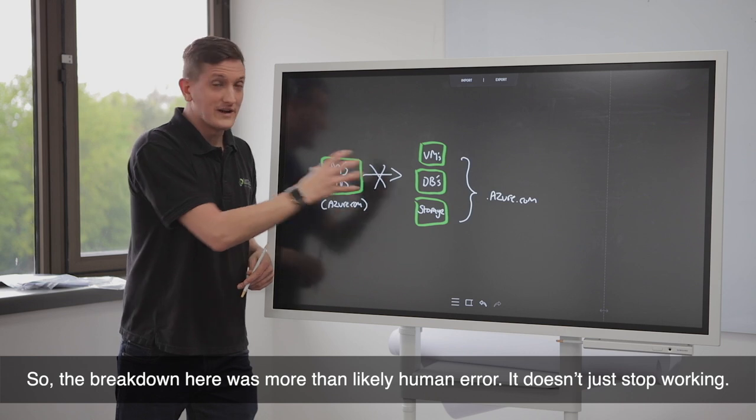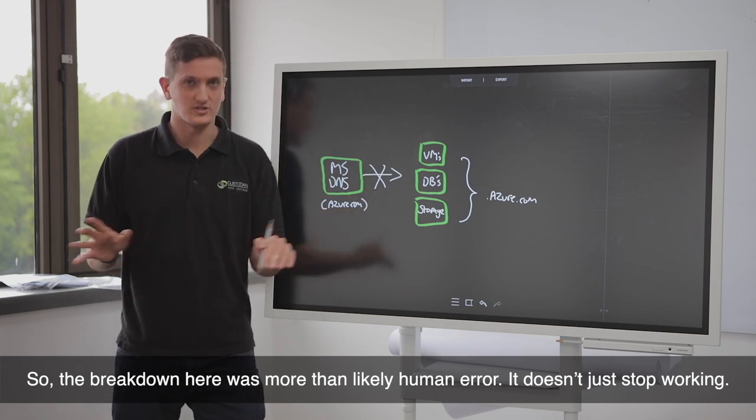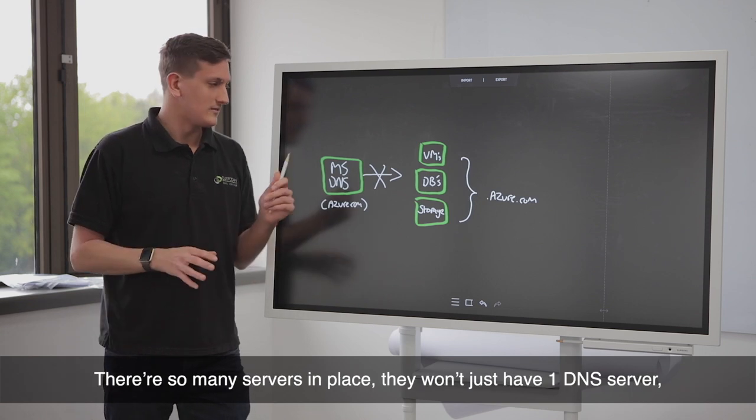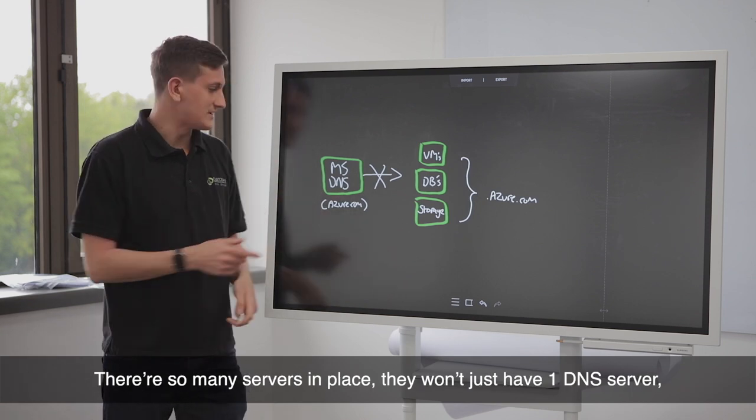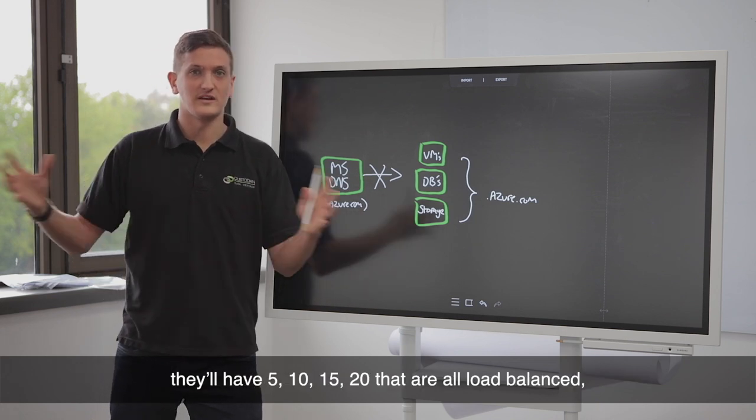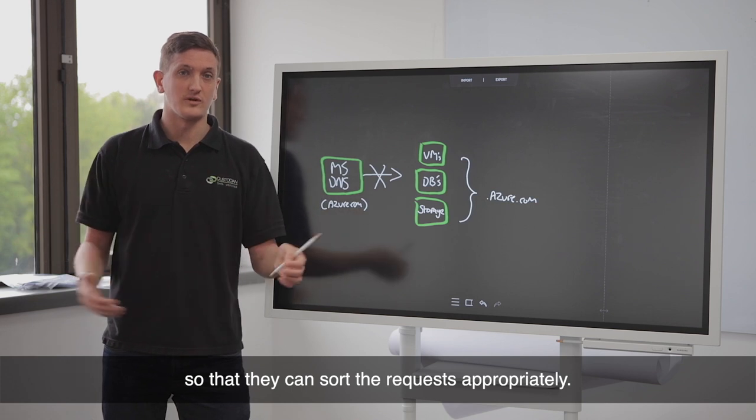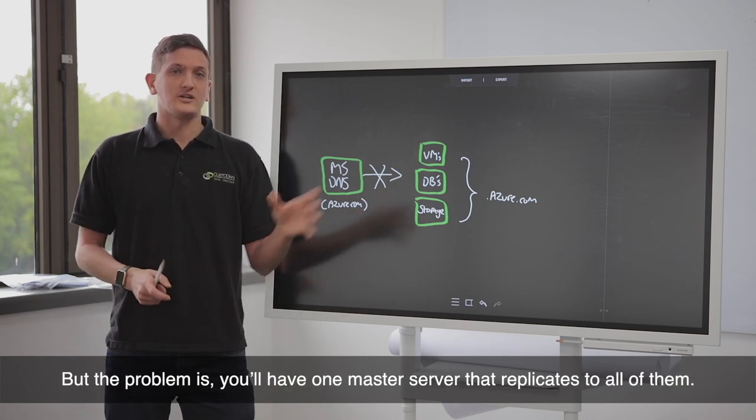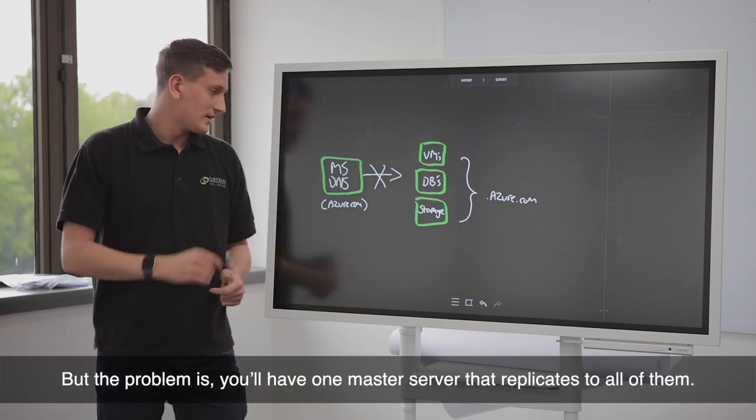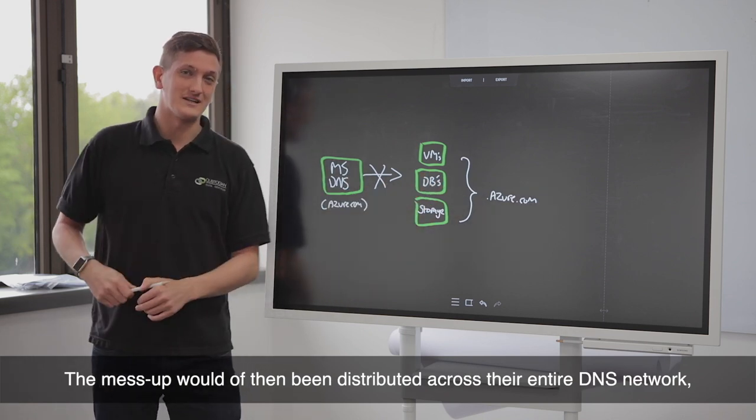So the breakdown here was more than likely human error. It doesn't just stop working. There's so many servers in place that they won't have just one DNS server. They'll have 5, 10, 15, 20 that are all load balanced so that they can sort the requests appropriately. But the problem is, you'll have one master server that replicates to all of them. The mess up would have then been distributed across their entire DNS network.